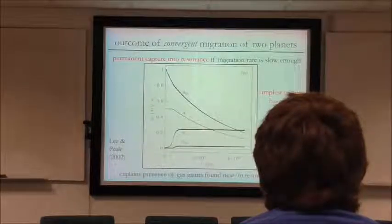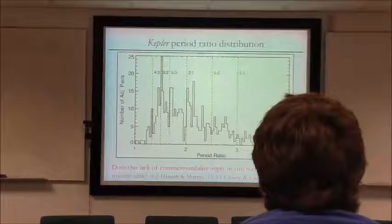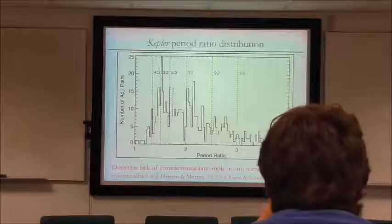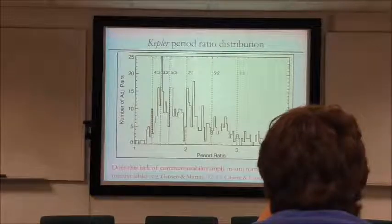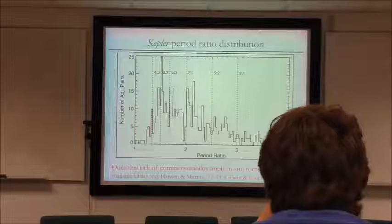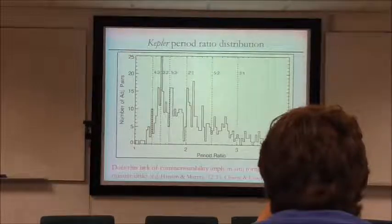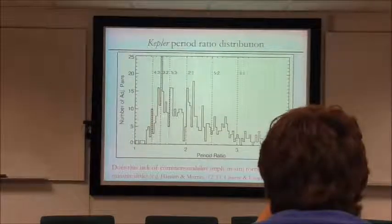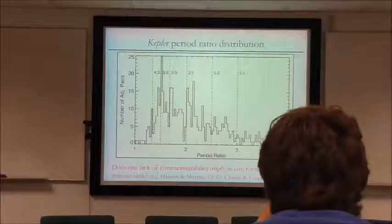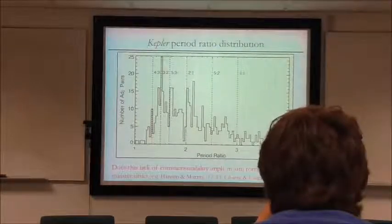This is a clear prediction: we can look at the Kepler data and ask whether Kepler planet pairs are near resonance. Here is the period ratio distribution for the Kepler sample — the number of adjacent pairs at each period ratio. The dashed lines are the locations of the major mean motion resonances, and you can see there is no preference for commensurability at all. Essentially any period ratio is equally likely. So the question is: does this lack of commensurability indicate that migration didn't happen and these planets must have formed essentially where we see them today, very close to their host star? This has been a question of debate over the past few years.